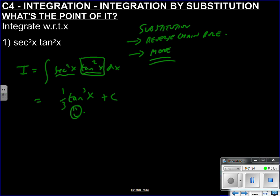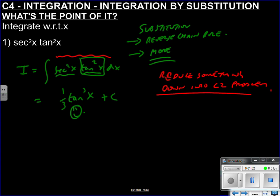But what if I couldn't spot that? The idea of substitution is to reduce something down into basically a C2 or even a C1 problem. What we do is change the variable — kind of like the chain rule when we let t equal something and differentiate. We're going to do something similar. So I'm going to let u equal something. The fun of substitution is choosing what — in your exam they'll tell you, but in our class I'm not going to tell you, so you figure it out. Let's say I let u equal tan x.